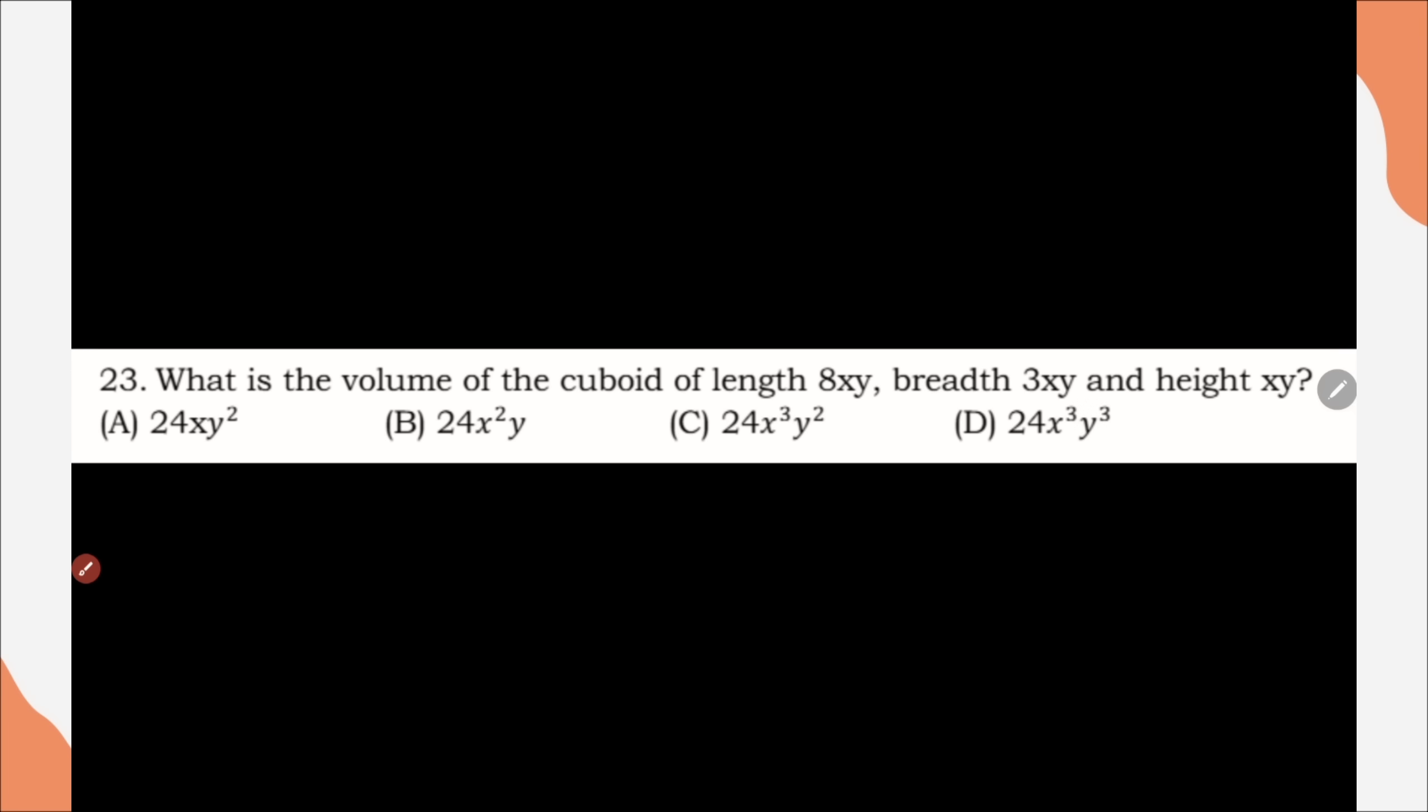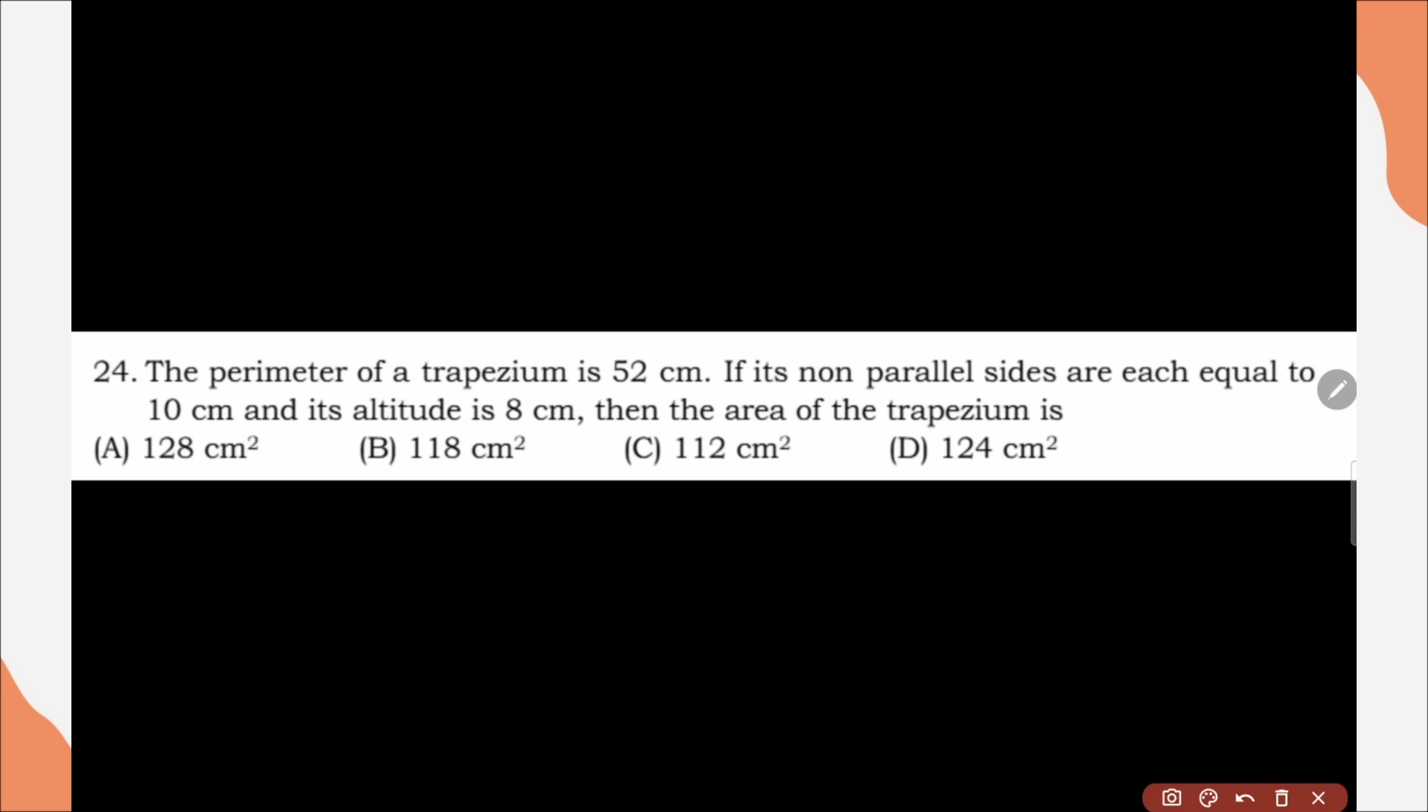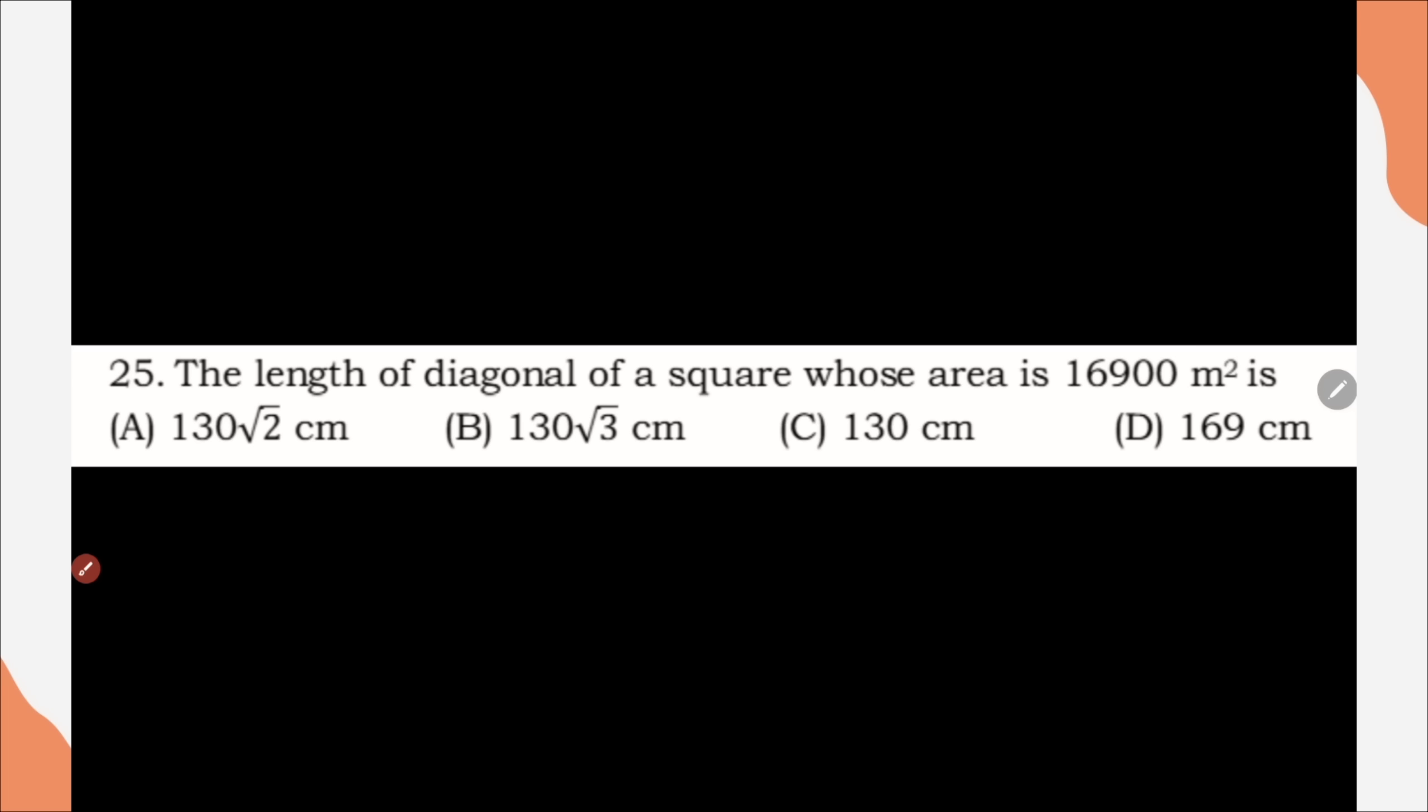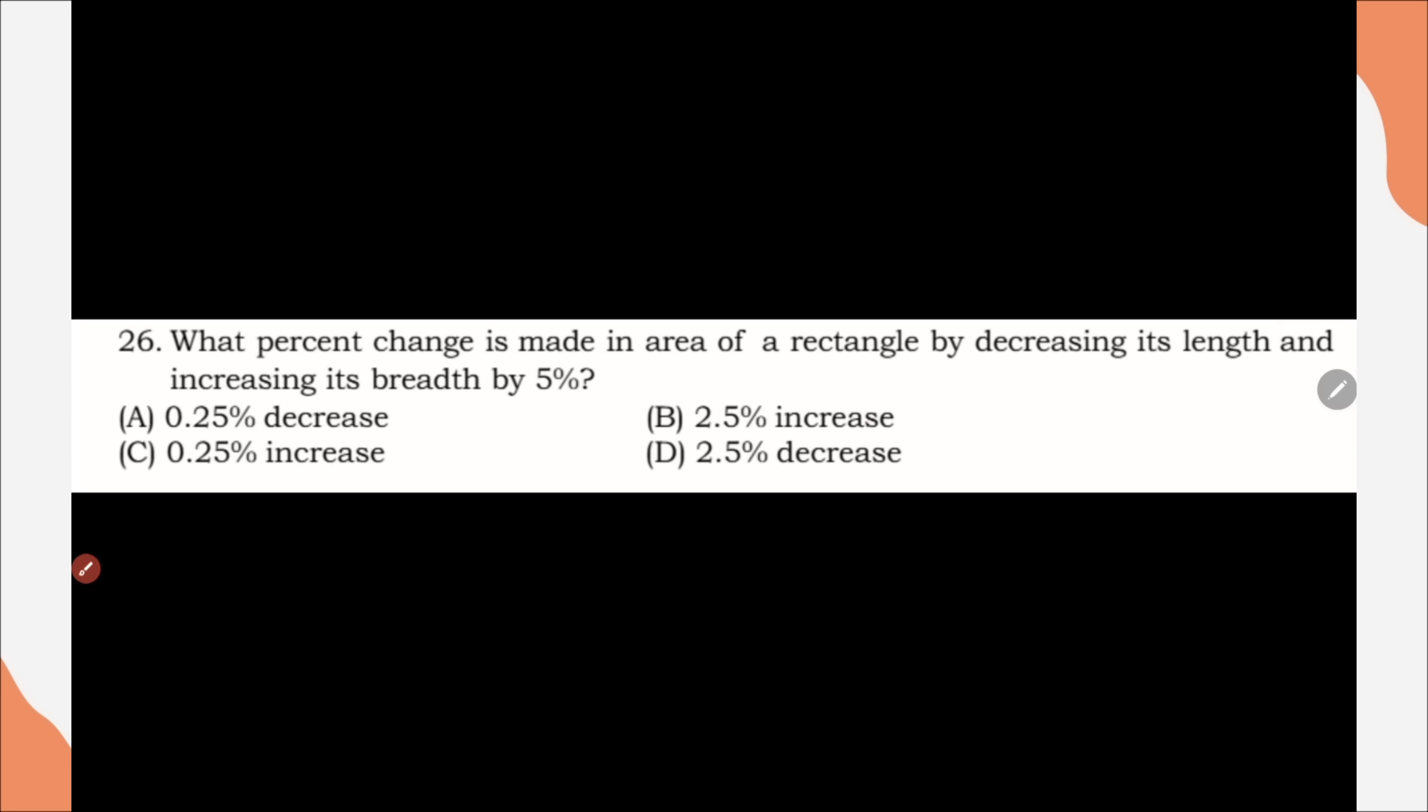Question number 23, what is the volume of cuboid of length 8xy, breadth 3xy and height xy, correct option is option D, 24x cube y cube. Question number 24, the perimeter of trapezium is 52cm, if its non-parallel side are equal to 10cm and its altitude is 8cm, then the area of trapezium is, correct option is option A, 128cm square. Question number 25, the diagonal of square whose area is 16900m square is, correct option is option A, 130 root 2cm.